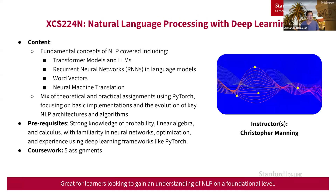Next we'll be going over XCS 224N. This is a course great for those who want to get more aware of the state-of-the-art models for natural language processing. You'll be covering important models like transformers, LLMs, word vectors, and machine translation models. It's a mix of theoretical and practical — you'll be using a lot of PyTorch to help implement some of the deep learning frameworks for the NLP algorithms discussed in class. Prerequisites include strong knowledge of probability, linear algebra, and calculus, with familiarity with deep learning frameworks like PyTorch. There are a total of five assignments for this course.